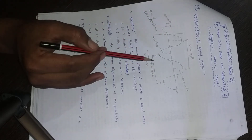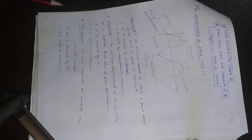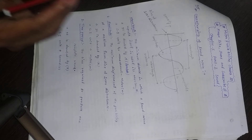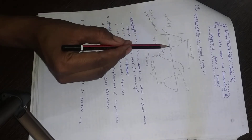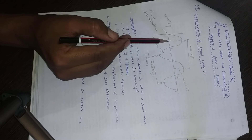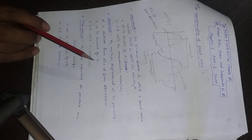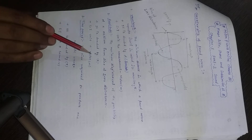We denote wavelength by lambda and its SI unit is meter. After wavelength comes amplitude — the maximum distance of a particle of a medium from the line of zero disturbance. The line of zero disturbance is where the normal particles vibrate, and the maximum distance from it is called amplitude. It is denoted by A.